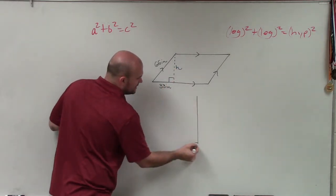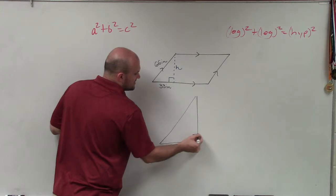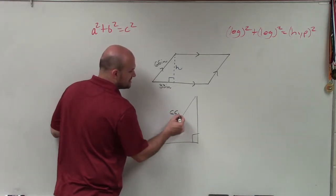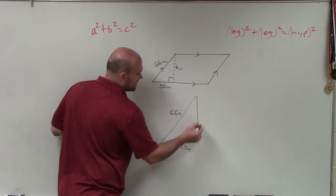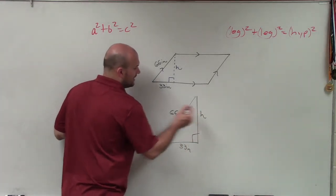So what I'm going to do is redraw the triangle, because that's really all we care about. We know that the hypotenuse is 66 inches, and one of the legs is 33 inches, and we just want to figure out what is the height.